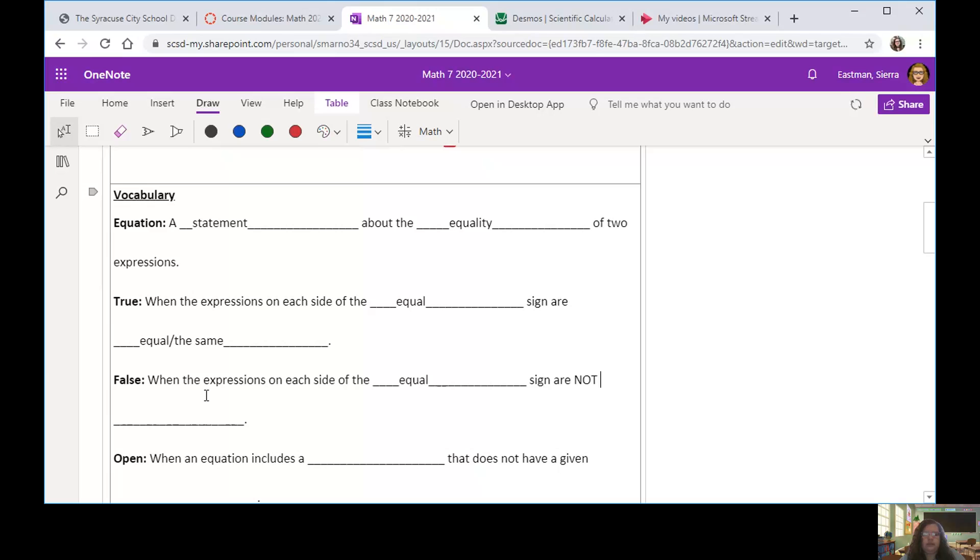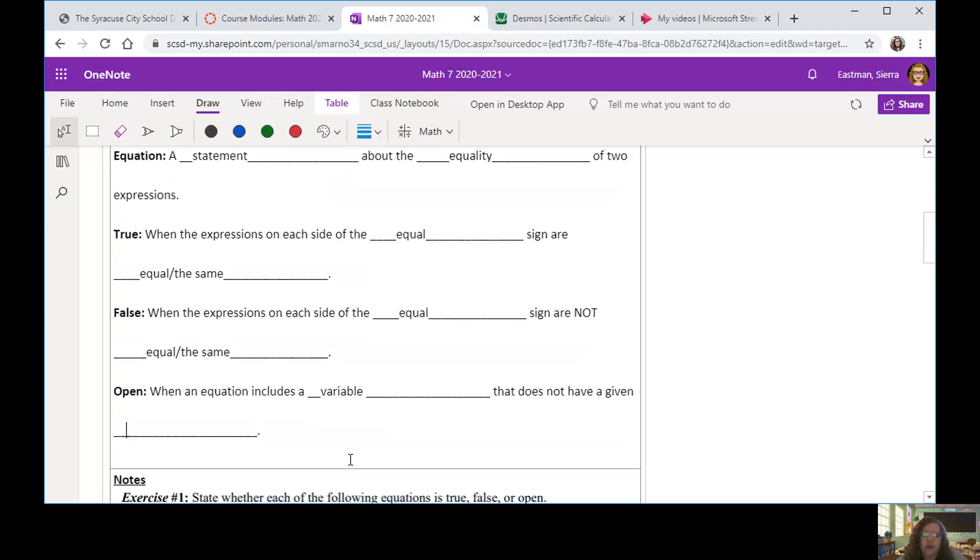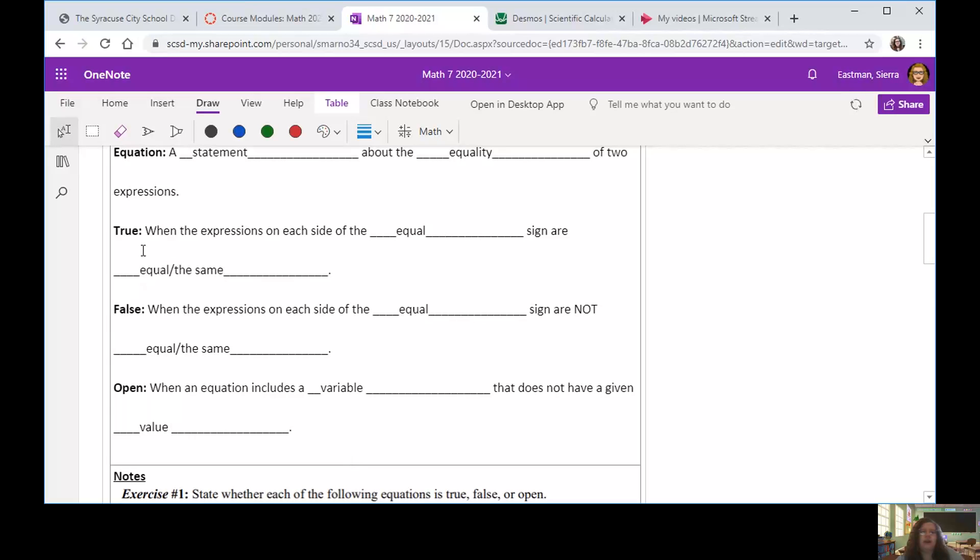And then when I say that an equation is open, this is actually kind of what I was talking about for the preview. It's when an equation includes a variable that does not have a given value. So if an equation is open, we actually can't tell if it's going to be true or false. We don't have a value to substitute for that variable. So let's do a little bit of practice with these.